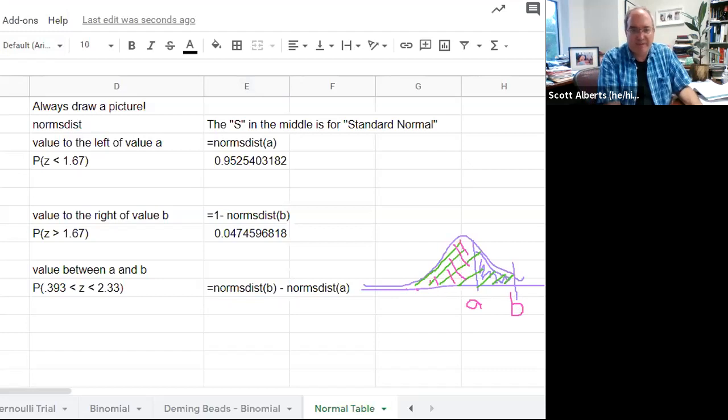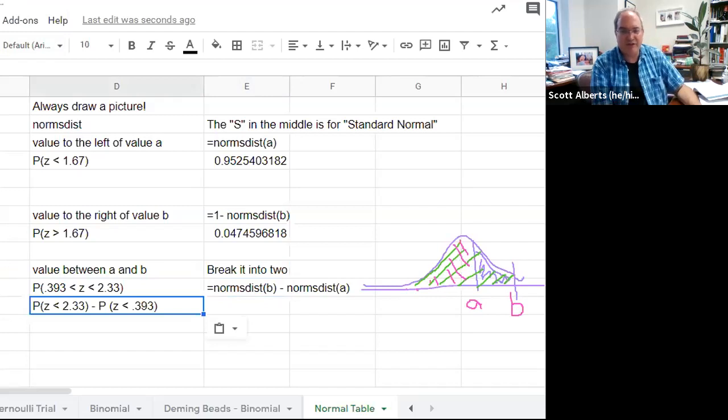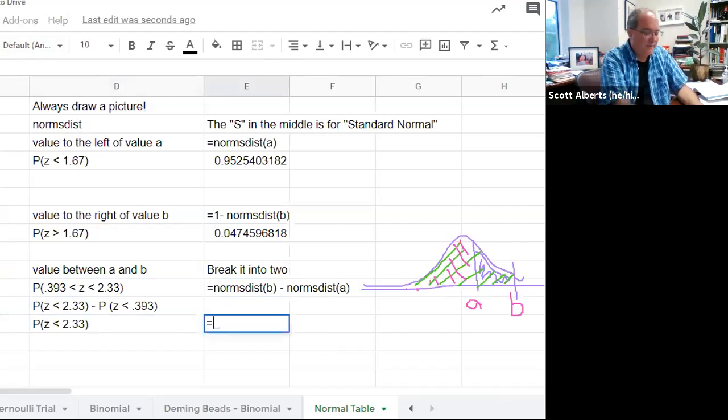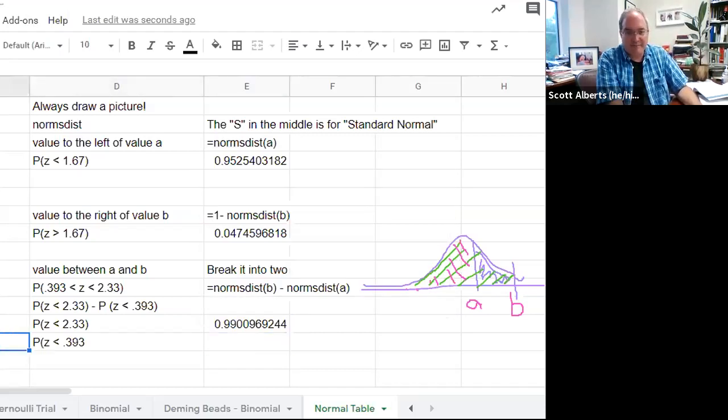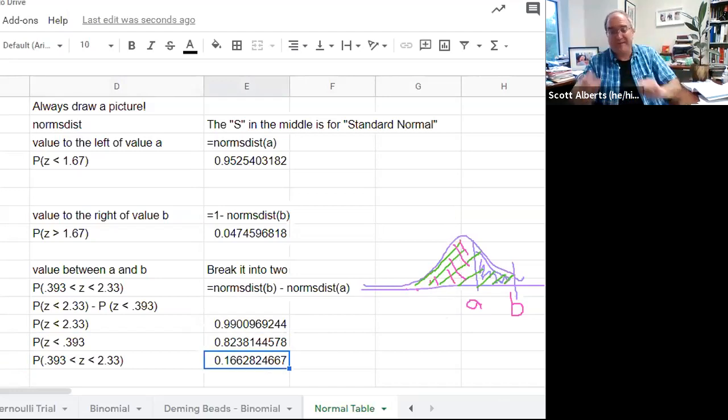We break the problem up into two pieces. The probability that Z is between those two values is equal to the probability that Z is less than the bigger number minus the probability that Z is less than the smaller number. This one is norms.dist 2.33, and for the second one we calculate that it's 0.82. Then we just subtract because subtraction is awesome.